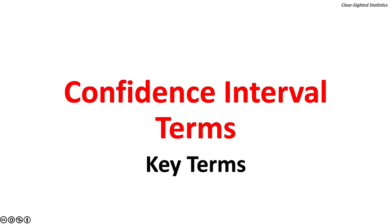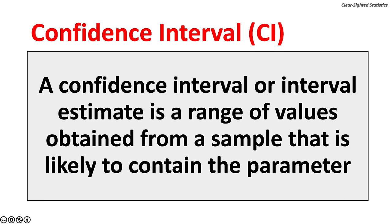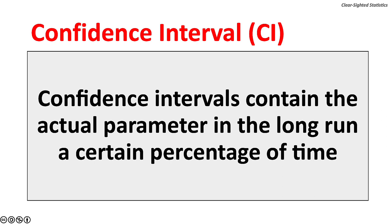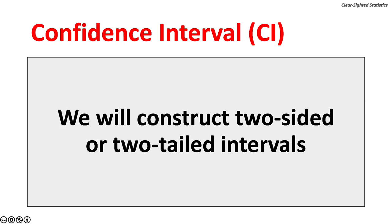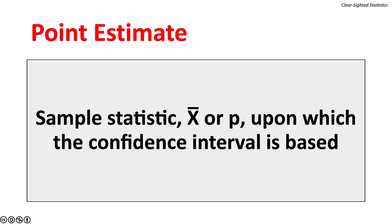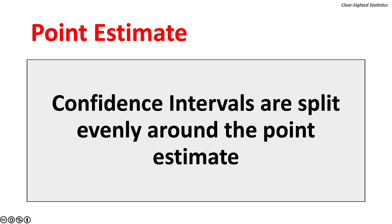Let's review important confidence interval terms. A confidence interval, interval estimate, or CI, is a range of values obtained from a sample that is likely to contain the parameter we seek to estimate. Confidence intervals contain the actual parameter in the long run a certain percentage of the time. We will construct two-sided or two-tailed confidence intervals. A point estimate is the best guess of an unknown population parameter. The point estimate is the sample statistic — x-bar for the sample mean, p for the sample proportion — upon which the confidence interval is based. Confidence intervals are split evenly around the point estimate; half of the interval will be above the point estimate and half will be below.